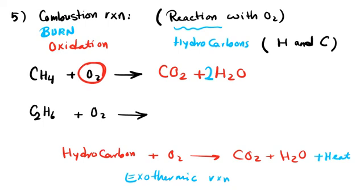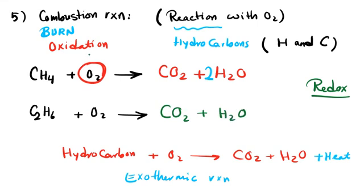Combustion reactions can also be classified as redox reactions, which I cover in another video. To summarize: hydrocarbon plus O2 always produces CO2 and H2O — this is oxidation or combustion. To balance an example like C2H6: you get 2 CO2 and 3 H2O, with 7/2 or 7 oxygen atoms needed. Two carbons, six hydrogens give 2 CO2 and 3 H2O, requiring 7 oxygen atoms. Thank you for watching this video.